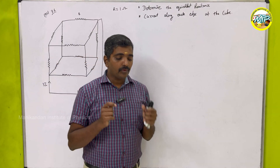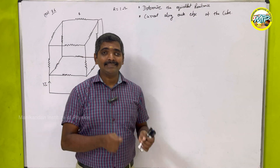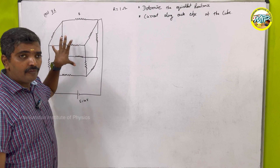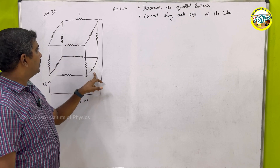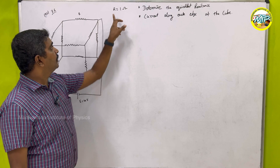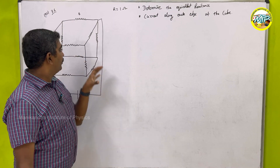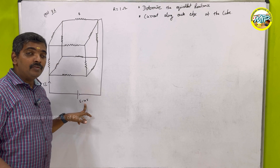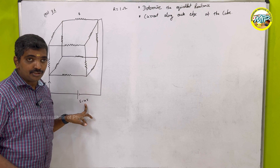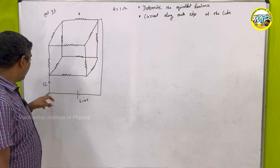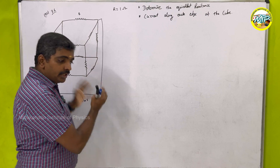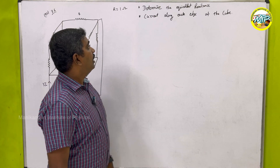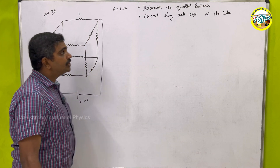Today we are going to solve the problem from the NCAT example 3.6. In this problem we have a cube of resistors where each resistor R equals 1 ohm. The cube is connected with a 10 volt battery — a 10 volt cell with negligible internal resistance — and the amount of current leaving from this cell is going to be 3I. We need to determine the equivalent resistance and the current along each edge of the cube.